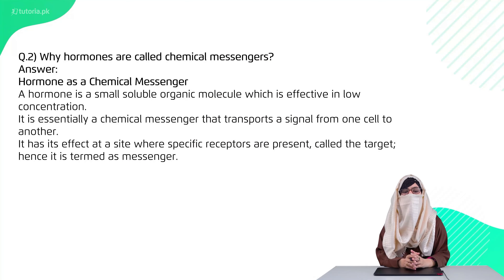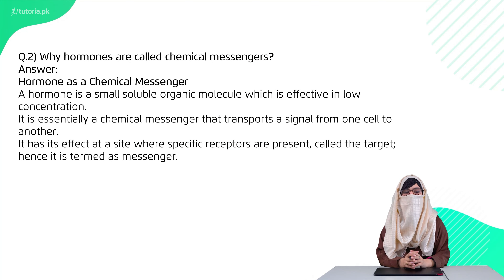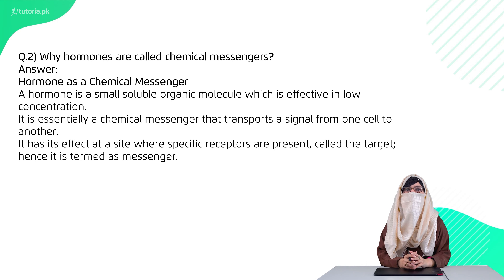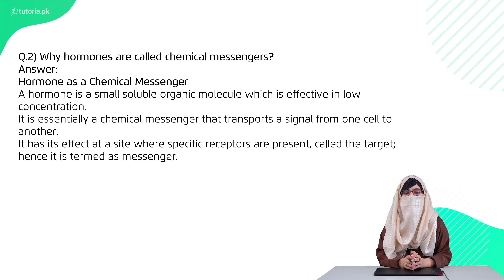The first short question is: why are hormones called chemical messengers? Hormones are called chemical messengers because, number one, they are chemical in nature, and number two, they are effective in low concentration.